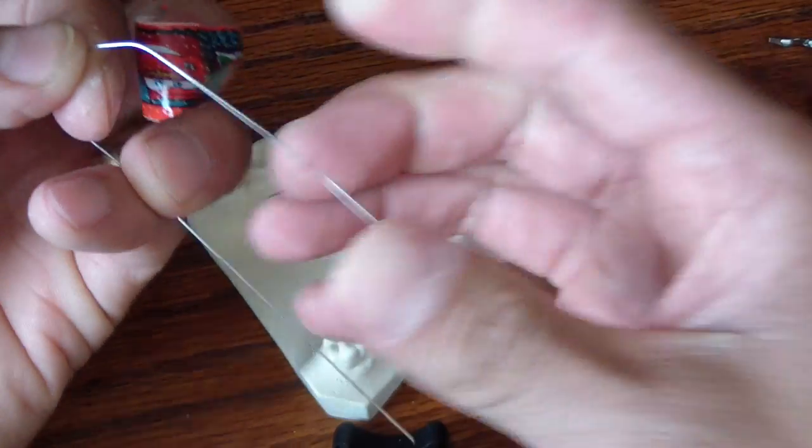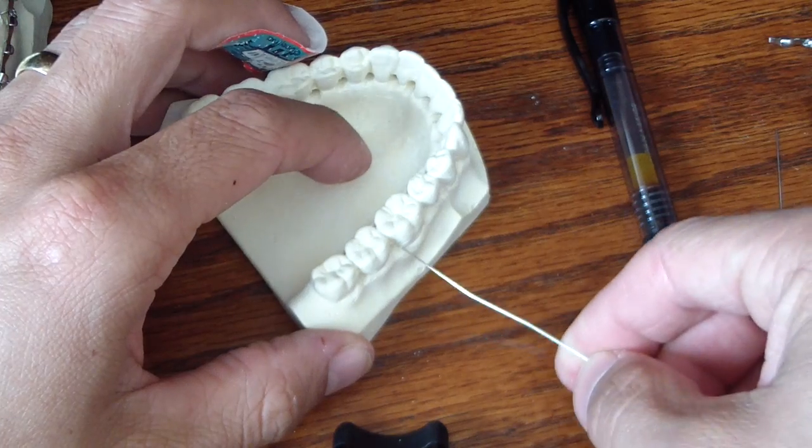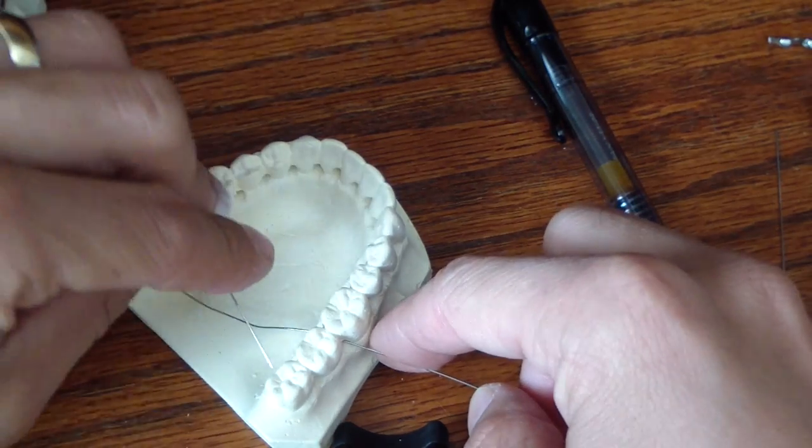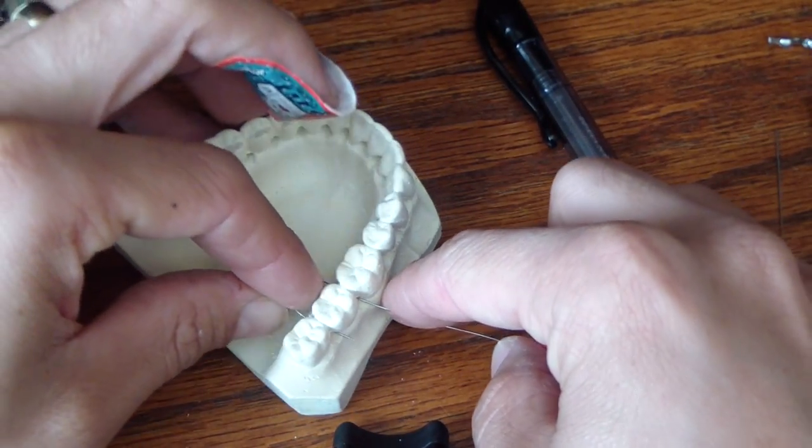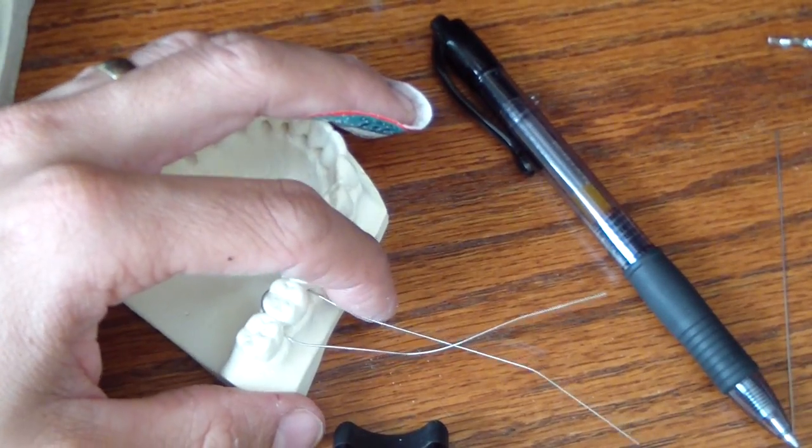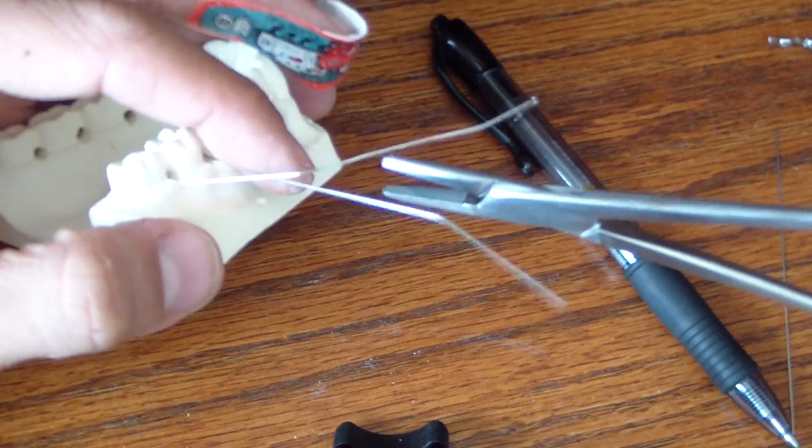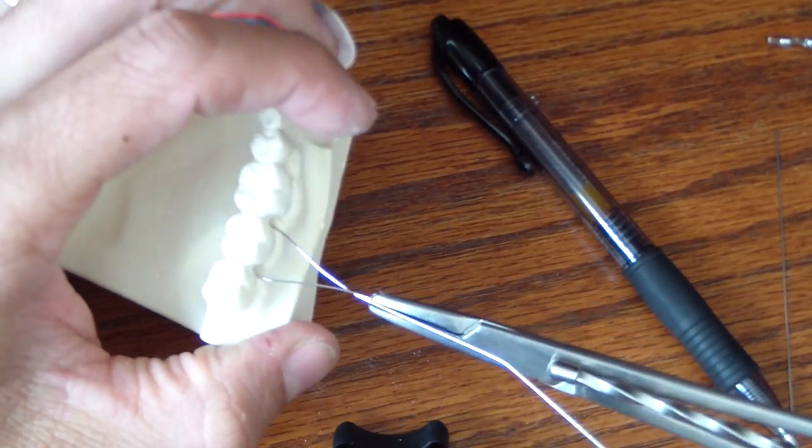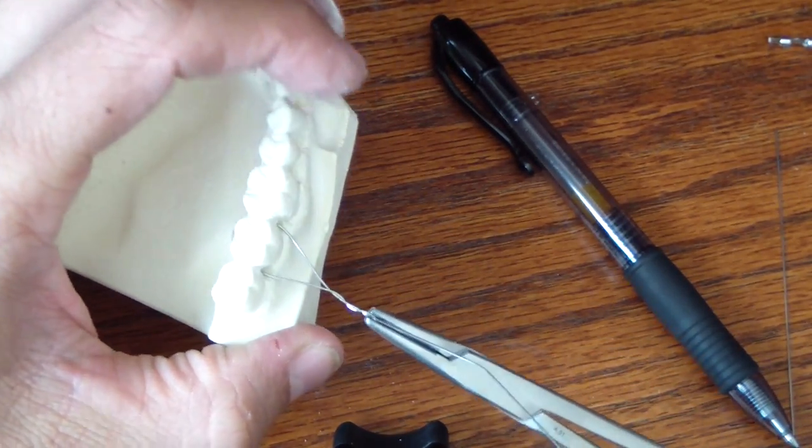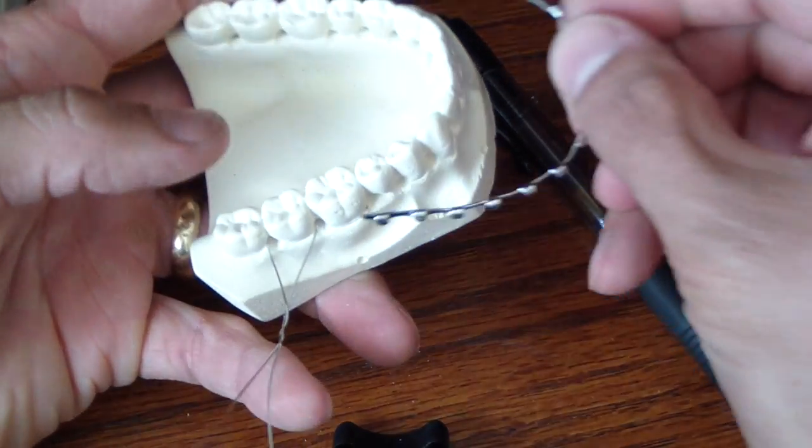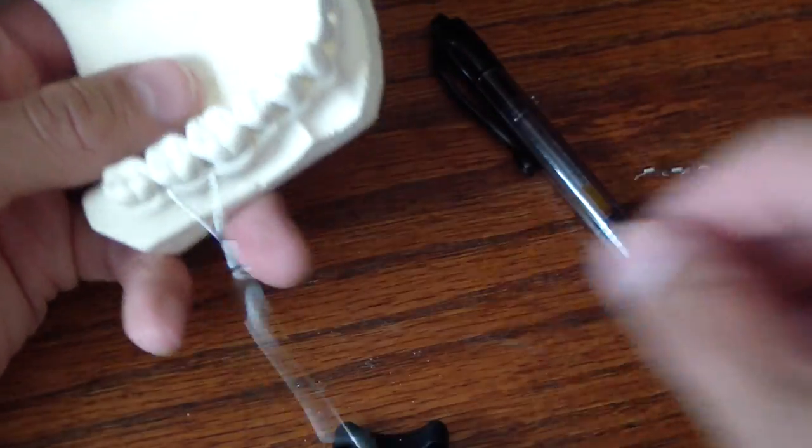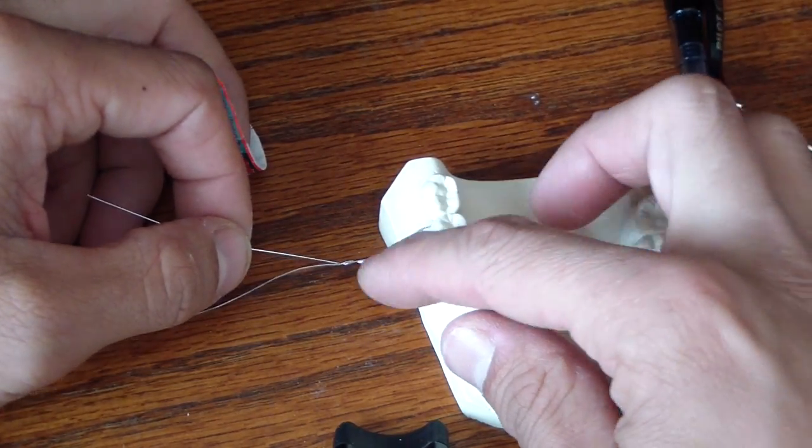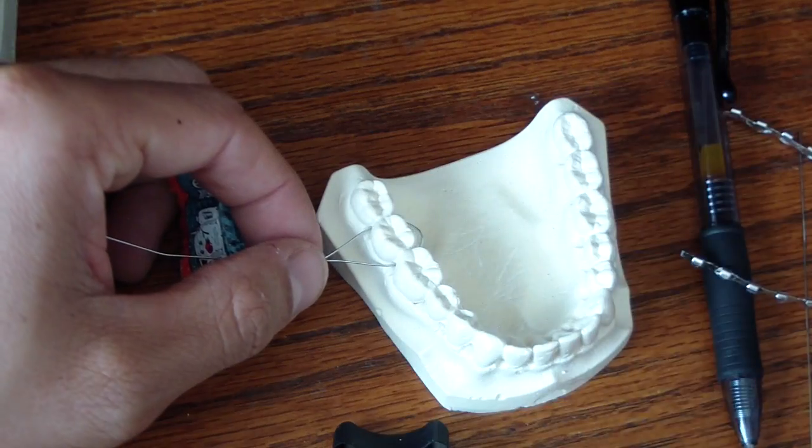What we're going to do first is take 26 gauge wire and make a loop around the sevens. Of course we'll be doing this with Hagar forceps. Through the embrasures around the lingual of your most posterior tooth and then just tie it off light. Then we're going to take our arch bar and put it through there.